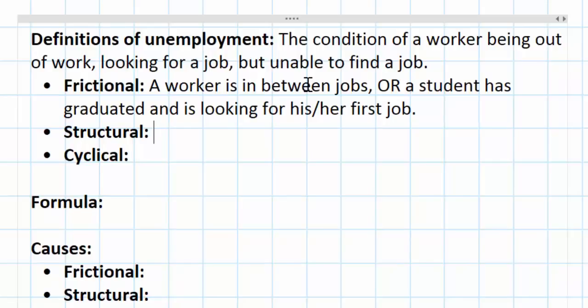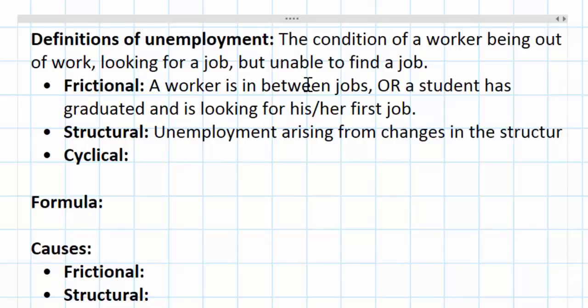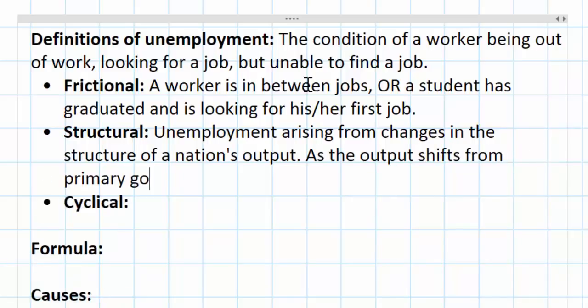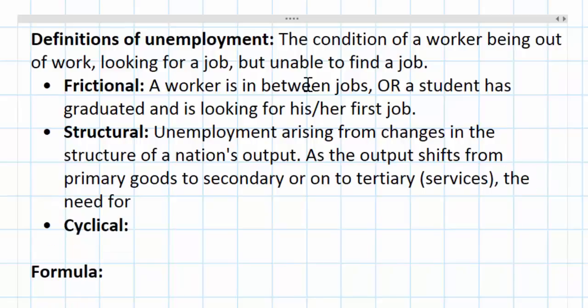A second type of unemployment that exists in every nation's economy is structural unemployment. This is unemployment arising from changes in the structure of a nation's output. For example, as the output shifts from primary commodities to secondary or on to tertiary, which refers to services, the need for different types of labor changes.